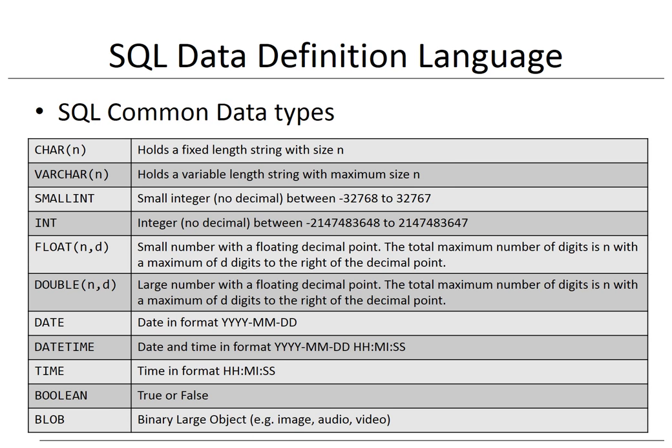INT represents an integer between the specified limits. FLOAT(n) represents a number with a floating decimal point, where the total maximum number of digits is n, with a maximum of d digits to the right of the decimal point. DECIMAL(n,d) represents a large number with a floating decimal point, where the total maximum number of digits is n, with a maximum of d digits to the right of the decimal point.